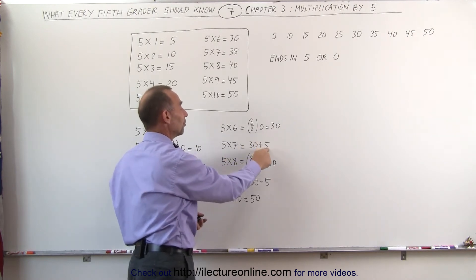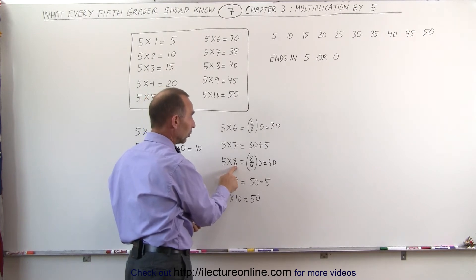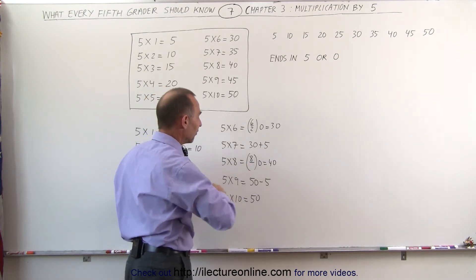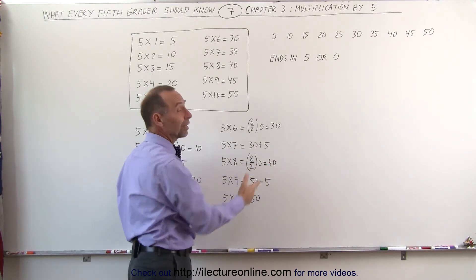5 times 7 is the previous answer plus 5. 5 times 8, you take half of 8 and add a 0. Half of 8 is 4, add a 0, you get 40.